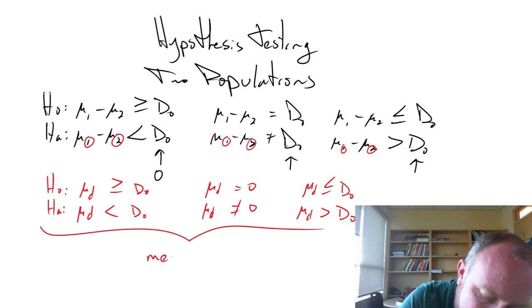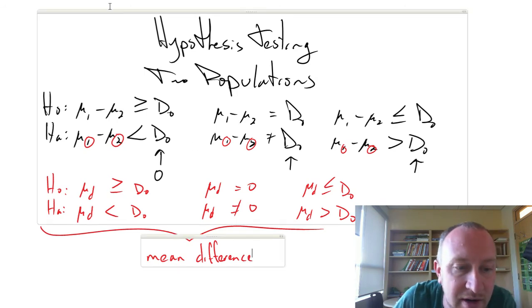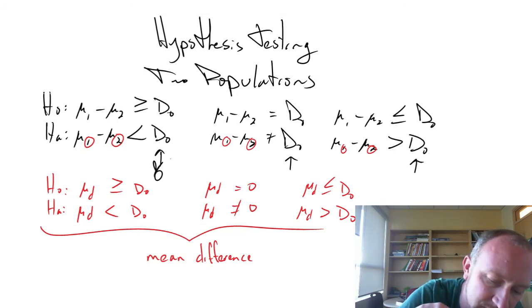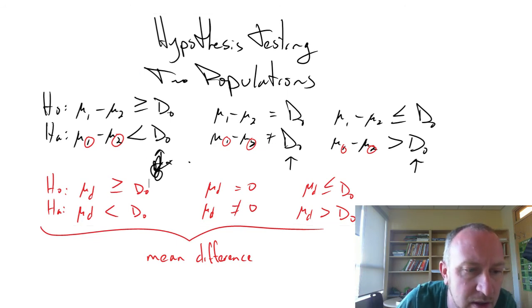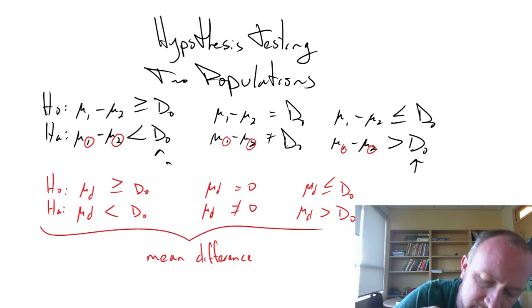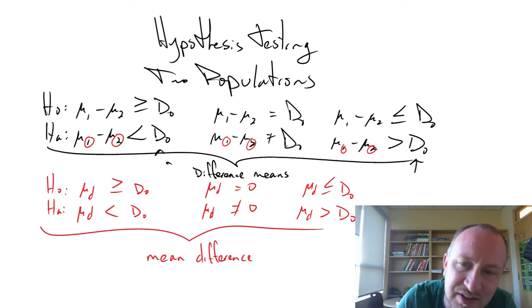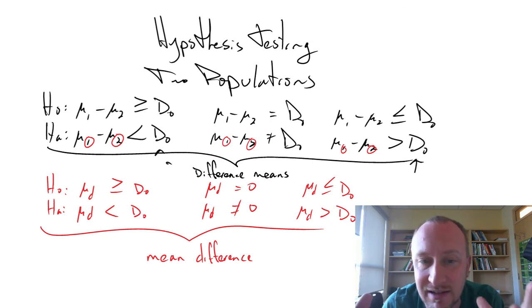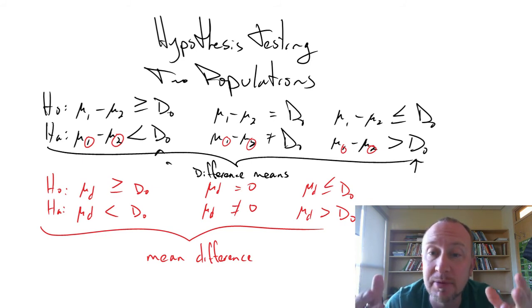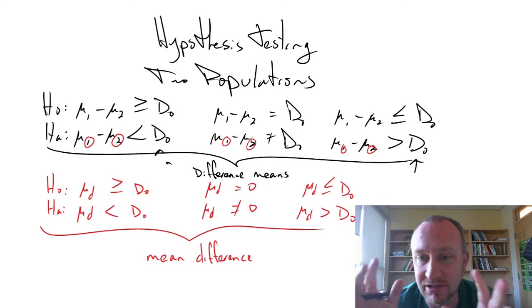So these ones are a mean difference or an average difference value, whereas these three up here, these three tests here we're testing not a mean difference but a difference in means. It's a very subtle difference that has everything to do actually with how the data is collected. And you'll see when we do these tests on a mean difference that the test itself resembles very closely a single population test from Module 9.